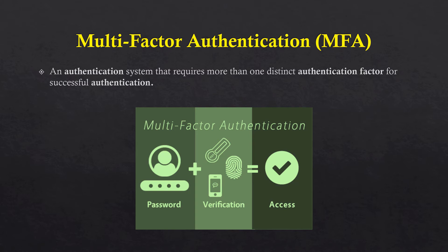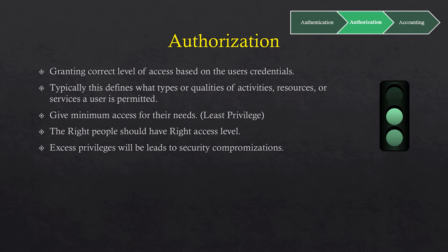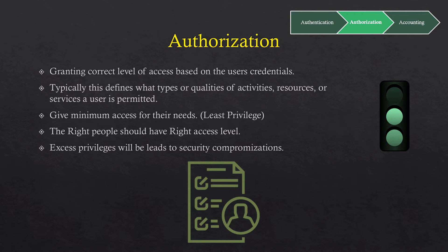The second A in the AAA model is authorization. Authorization means providing the correct level of access that a user should have based on their credentials — the right people should have the right access level. Normally this is the principle of least privilege, which states that users, devices, programs, and processors should be granted the minimum permissions to do their required functions and not more than that. Any authorization beyond the normal job function opens the door for either accidental or malicious violations of confidentiality, integrity, and availability.